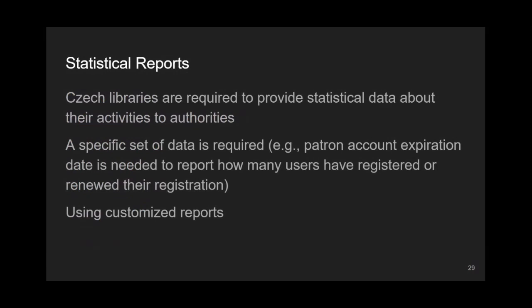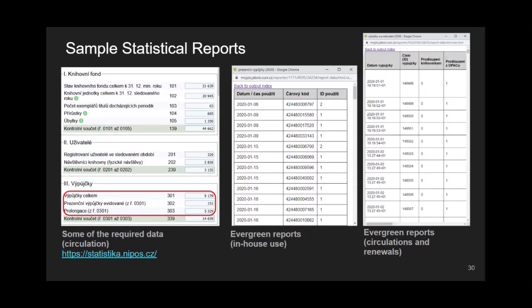We will start with Statistic Reports. Czech libraries are required to provide statistical data about their activities to authorities. Czech authorities require both data which can be easily extracted from Evergreen and data which are rather difficult to put together. One example of the latter is patron account registration date, needed to report how many users have registered or renewed their registration. Using customized reports can be a solution. The screenshots show two Evergreen reports providing information on in-house use and on circulations and renewals, all designed to gather data for the official statistical form.